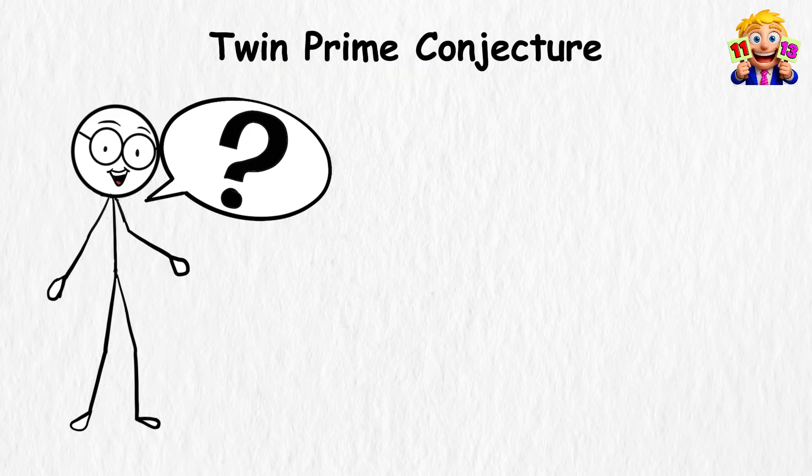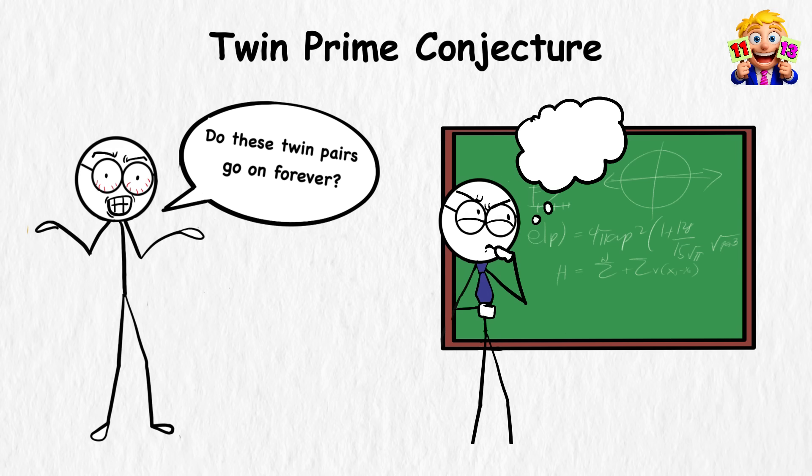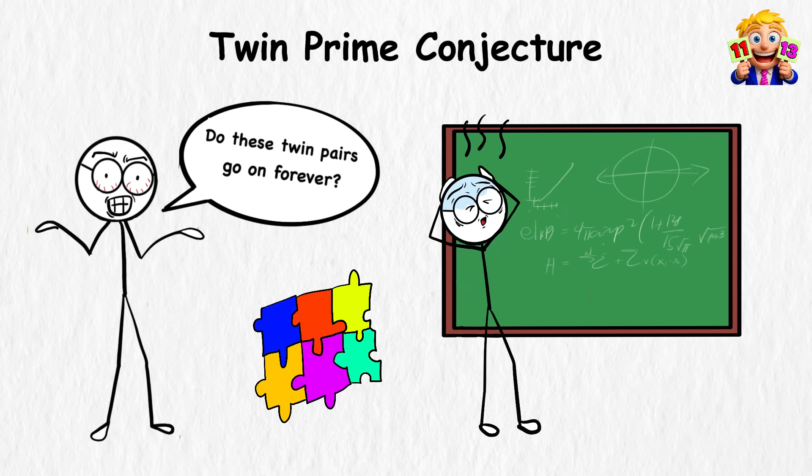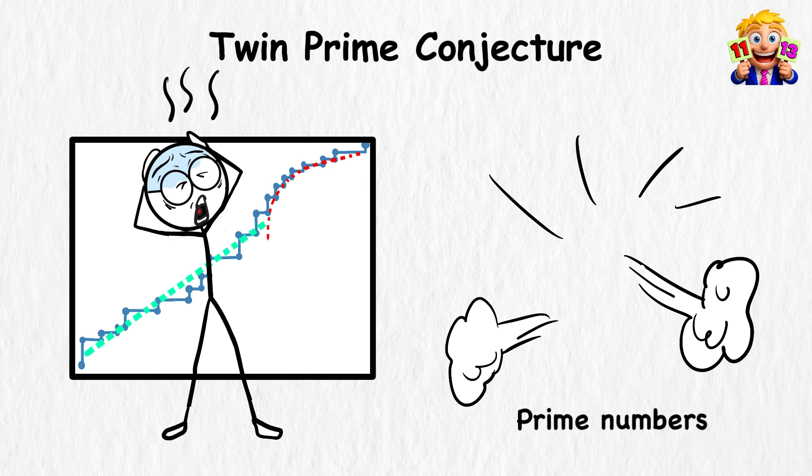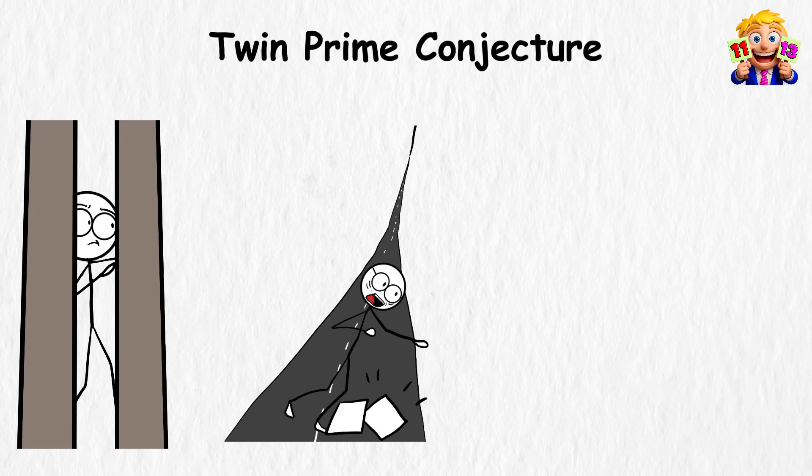The question is simple to ask, but hard to answer. Do these twin pairs go on forever? Most mathematicians think they do, but proving it has turned out to be one of the hardest puzzles in math. And the higher up the number line you go, the harder it gets. Twin primes become rarer. You can go for a long stretch without seeing any, then suddenly stumble on a pair hiding in the middle of nowhere.